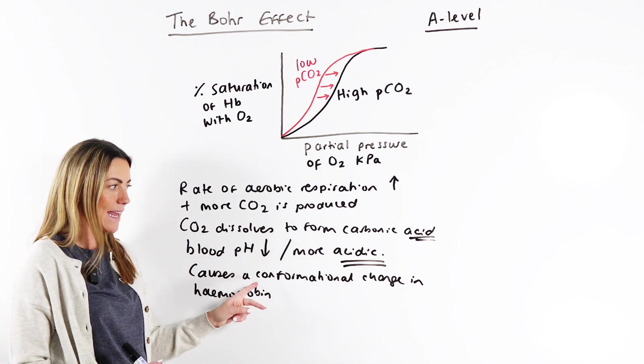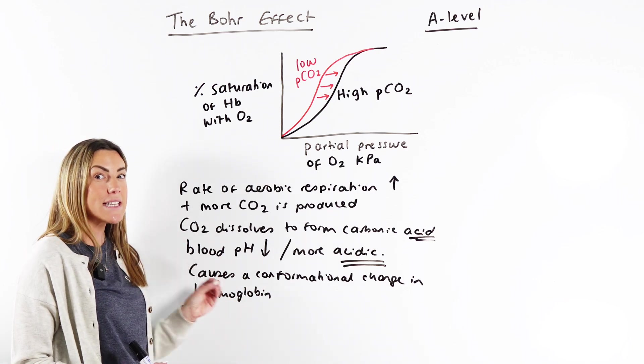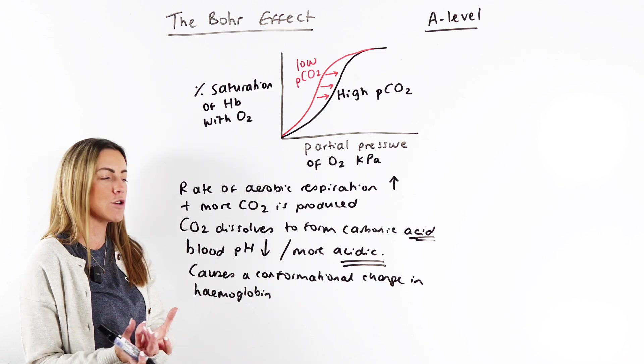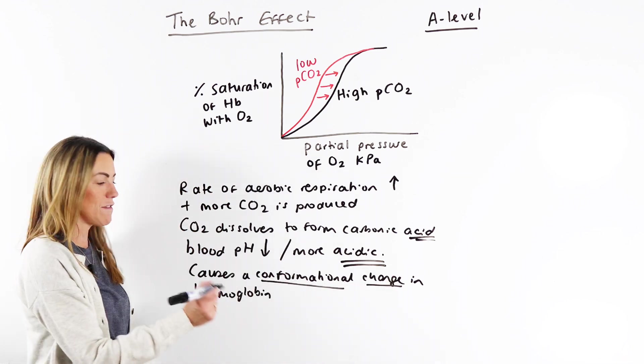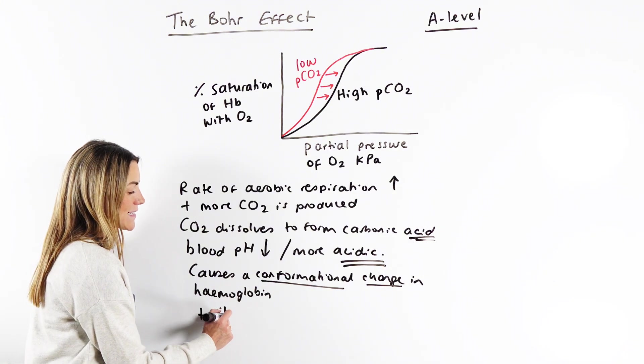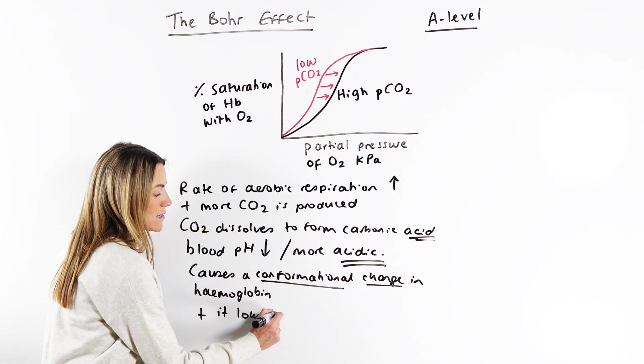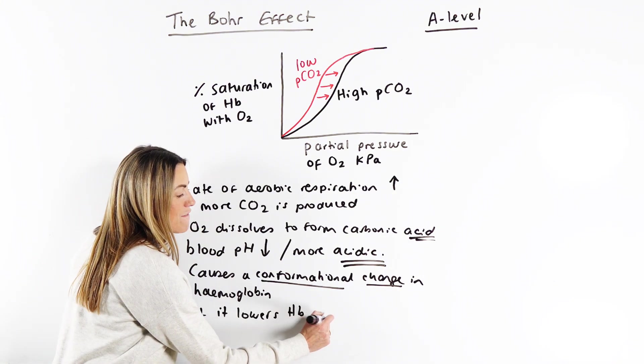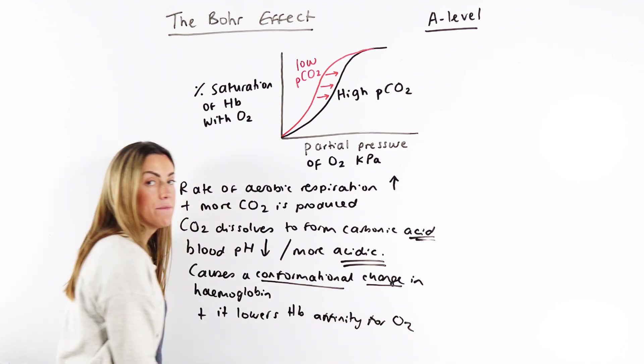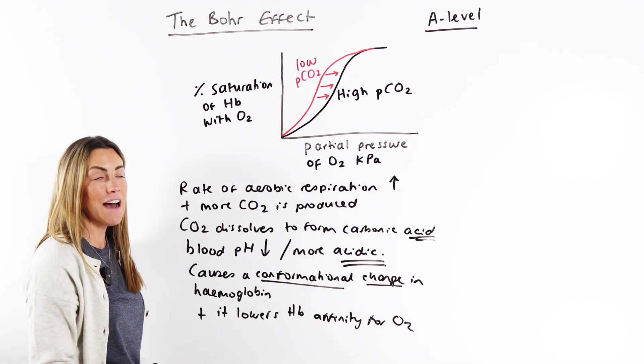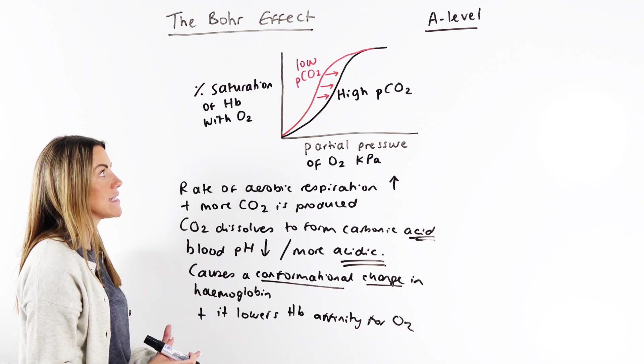But because we've lowered the pH, it's more acidic in the blood, this does alter the shape of hemoglobin. We say it causes a conformational change in the shape of hemoglobin. And it lowers hemoglobin's affinity for oxygen. Now we can go to the graph and see if we can make sense of this.